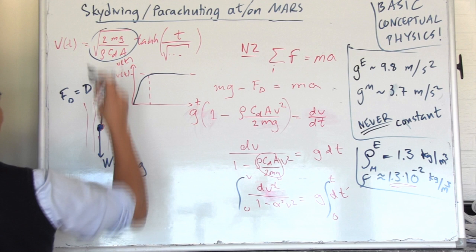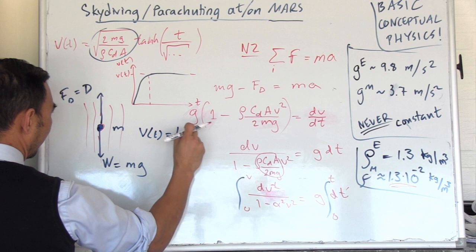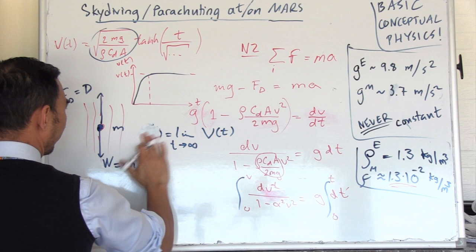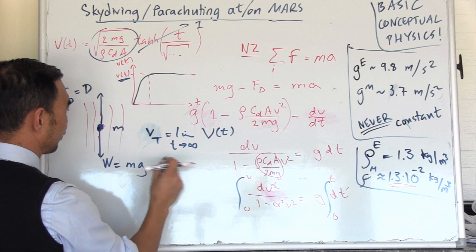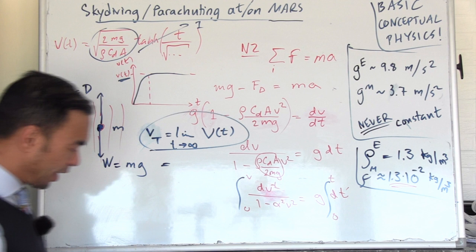You can compute that too. Experimentally it's easy to do. Just go to a skydive club, have all the instruments, and jump out and see when you reach your terminal velocity. The terminal velocity is this: when you let t go to infinity, you will have v sub t, terminal velocity.